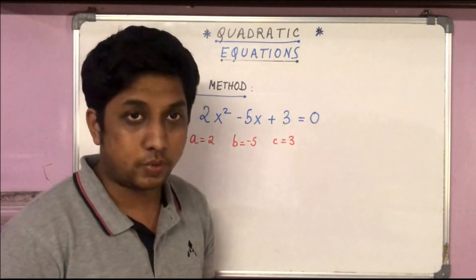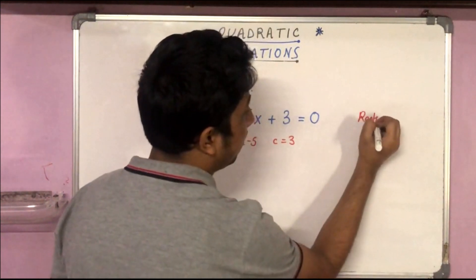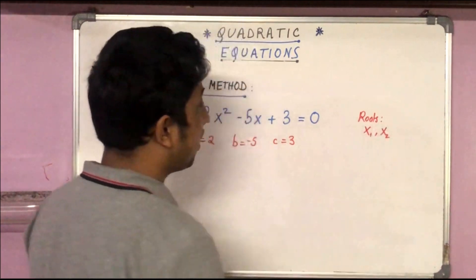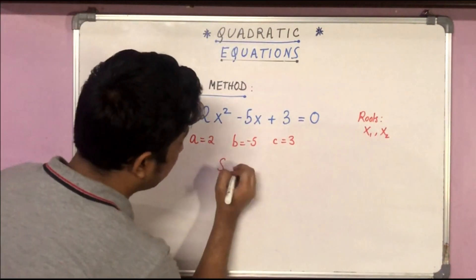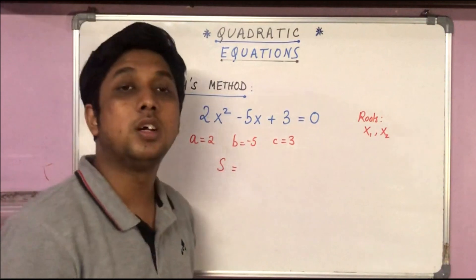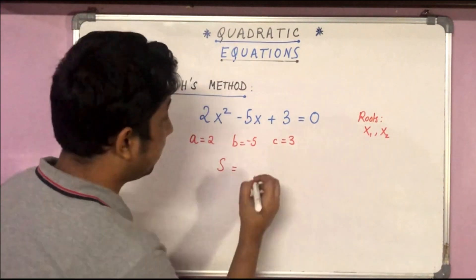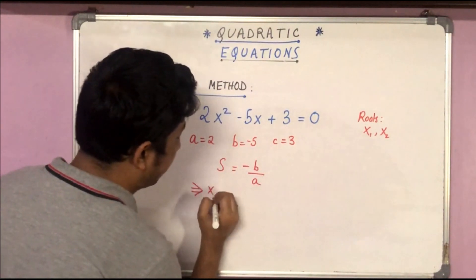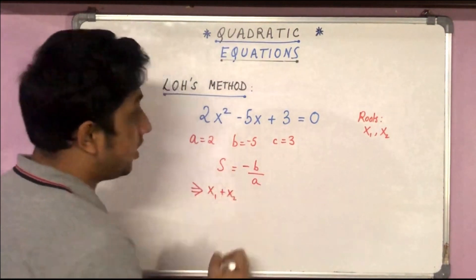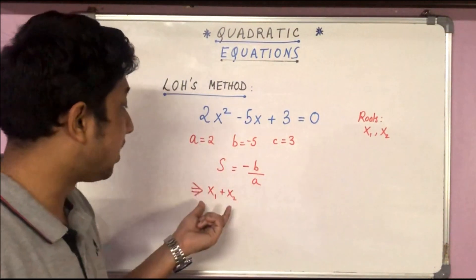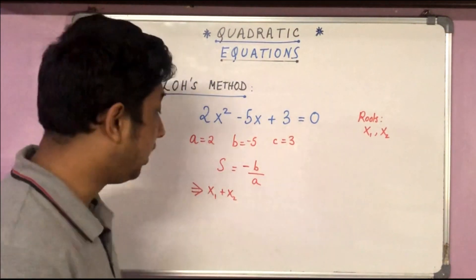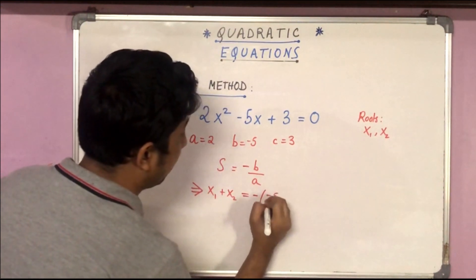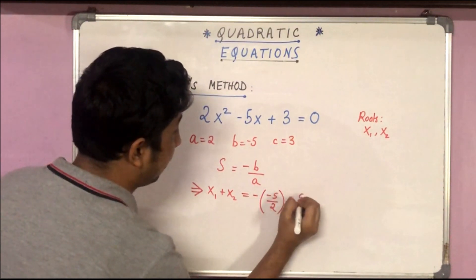Now focus on the sum of the roots of this equation. Let's say the roots are x₁ and x₂. We know that the sum of the roots of a quadratic equation is −b/a. So x₁ + x₂ = −b/a, which in this case is 5/2.